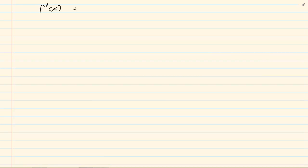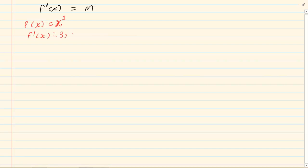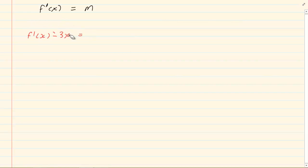From what we have learnt already, you know that by doing the derivative of any equation I am getting m. So if I gave you that f of x is equal to x cubed, you can tell me the derivative is 3x squared, which is actually m. So you know that the derivative is equal to m.